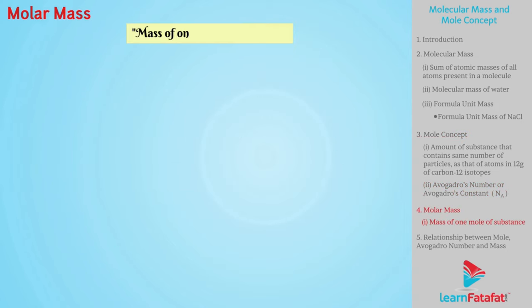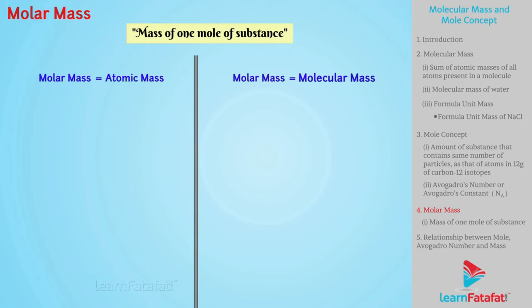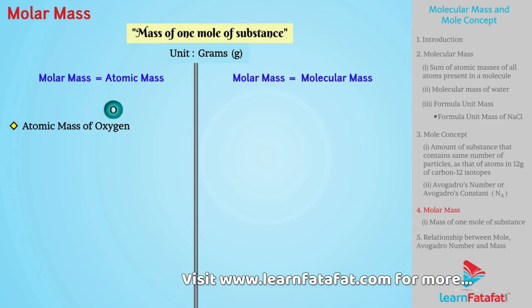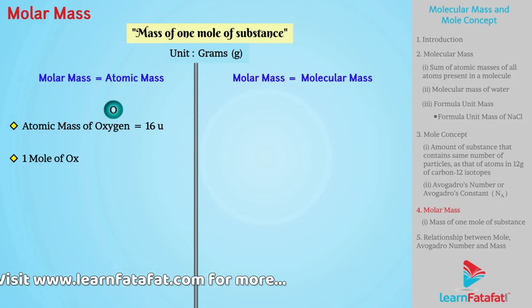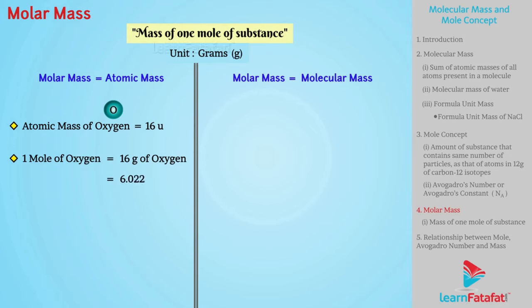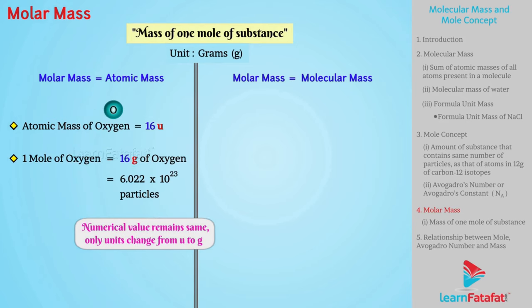Molar mass. Mass of 1 mole of substance is called as molar mass. It is equal to its atomic mass or molecular masses in grams. For example, 1 oxygen atom has atomic mass of 16 unit. Then 1 mole of oxygen will have 16 gram of oxygen. That is 6.022 into 10 raise to 23 particles. One interesting thing to observe here is that numerical value 16 remains same. Only units change from U to G. Same thing is observed in gram molecular mass or molar mass of molecules.